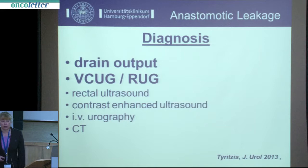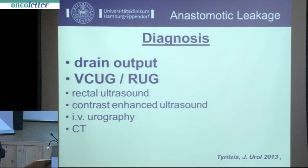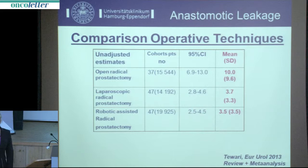Diagnosis is mainly done by high drain output. If you find creatinine in that fluid, you are sure you have a leakage. You can perform a VCUG or retrograde urethrogram to confirm the diagnosis, though these investigations are not necessary in the majority of cases.